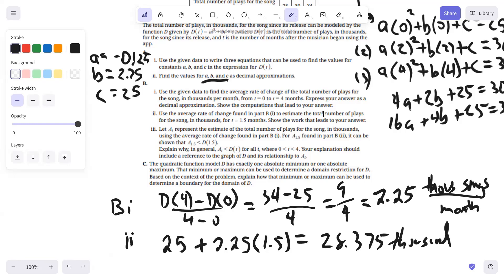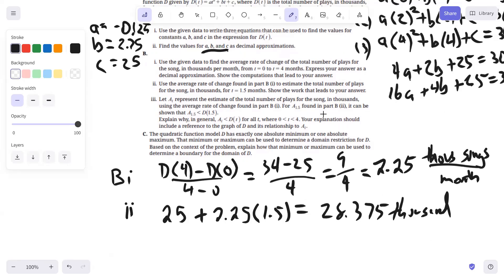Part 3, let A of T represent the estimate of the total number of plays for the song in thousands using the average rate of change found in Part B1. For A of 1.5 found in Part B2, it can be shown that A of 1.5 is less than D of 1.5. Explain why, in general, A of T is less than D of T for all T. Your explanation should include a reference to the graph of D and its relationship to A of T.